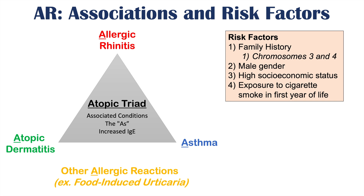Risk factors for allergic rhinitis include family history — there appear to be genes on chromosomes 3 and 4 related to the condition. Being male is also a risk factor, as is higher socioeconomic status, and exposure to cigarette smoke in the first year of life.